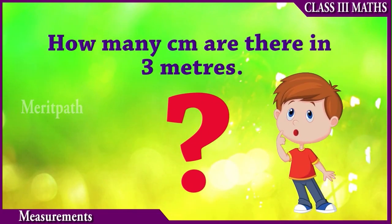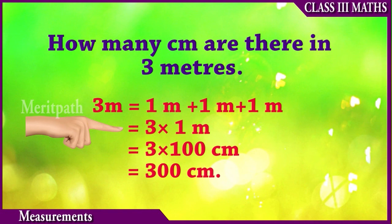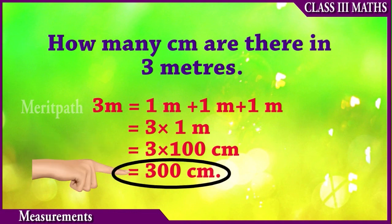How many centimeters are there in 3 meters? 3 meters is equal to 1 meter plus 1 meter plus 1 meter. So, we have 3 ones meter in 3 meters — that is 3 into 1 meter. We know that 1 meter is equal to 100 centimeters. So, 3 into 100 centimeters is 300 centimeters.